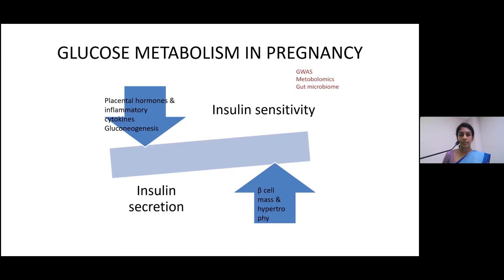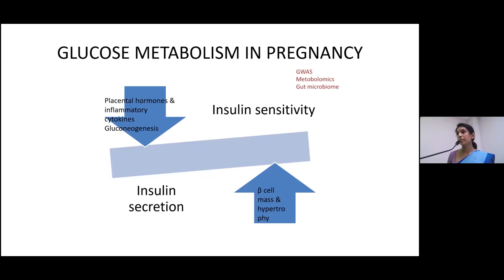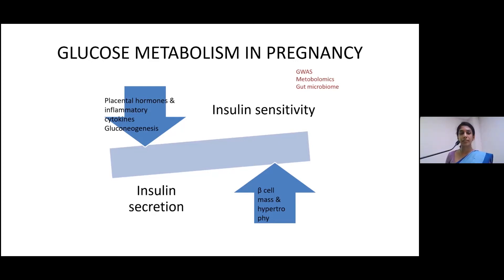If a patient has no pre-existing problems with insulin resistance or insulin secretion, she will manage to go through pregnancy without diabetes. But if there is any pre-existing defect, she will develop gestational diabetes. There are also new insights into the pathophysiology of diabetes in pregnancy, including genetics and epigenetics, certain metabolites like branch-chain amino acids, and gut microbiomes.